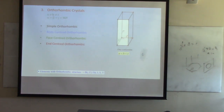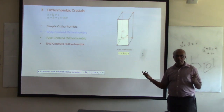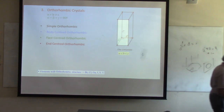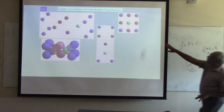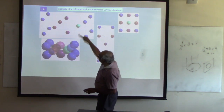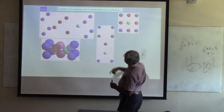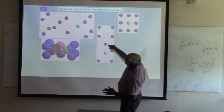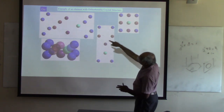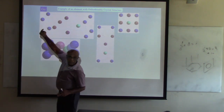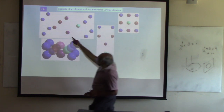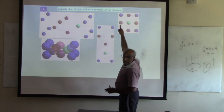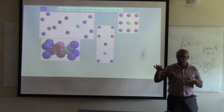For orthorhombic, A, B, C are all different, but alpha, beta, gamma are all 90 degrees. If I look at the structure from one angle, you see the corner atoms, the middle one, and the front two. If you look from the side, you see the four corners, the middle green atom, and two additional ones. Please understand how they look when you look at projections.